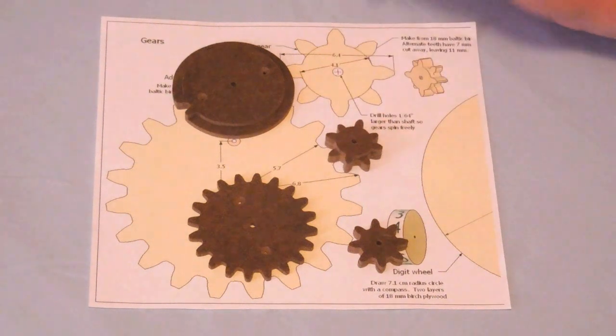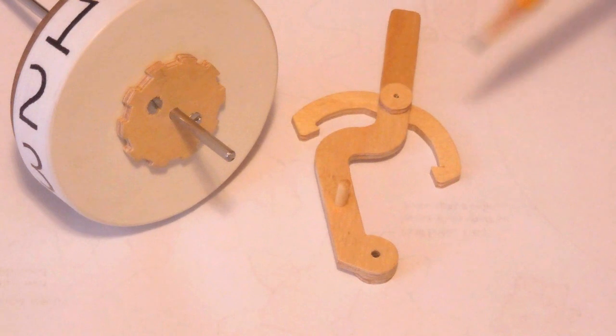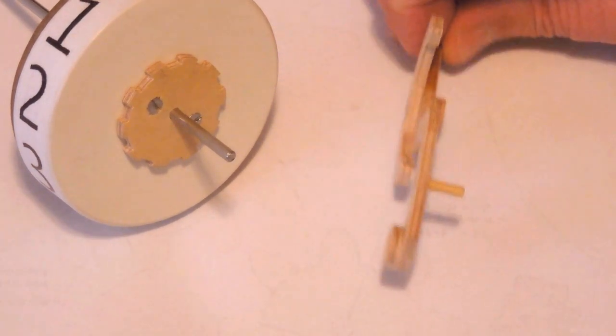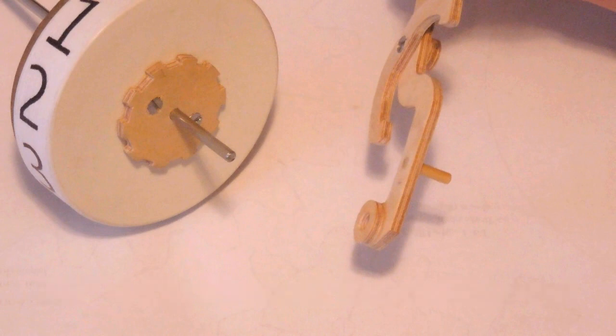These all turn on a 1⁄8 inch piano wire. The ratchet, yoke, and advanced lever are all made from 1⁄8 inch 6-ply plywood. This is actually two 3-ply pieces of plywood.